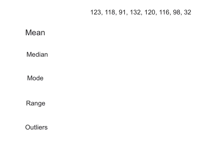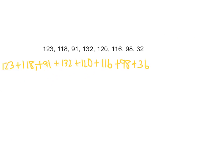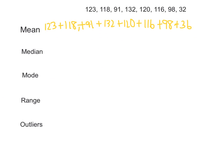One more set of examples. For the mean, we're going to take these numbers and add them up: 123 plus 118 plus 91 plus 132 plus 120 plus 116 plus 98 plus 32. When you do that, you get a total of 834.